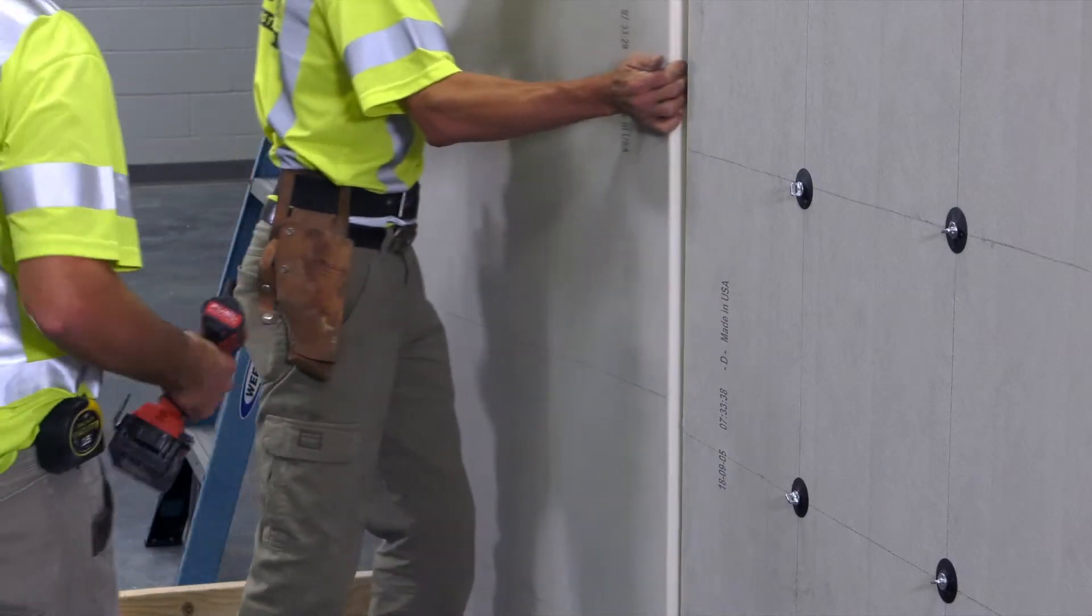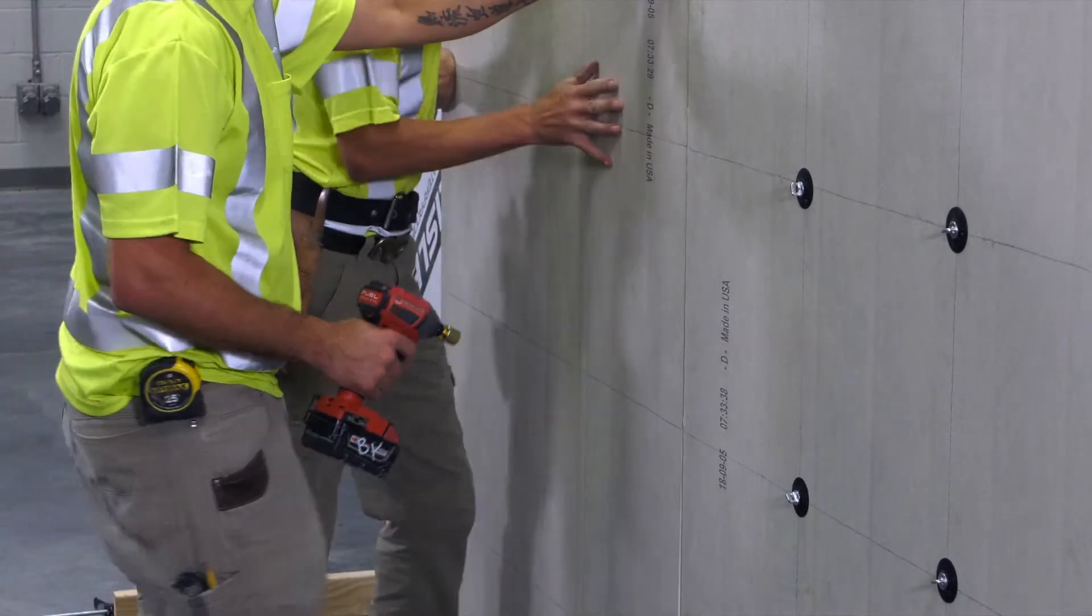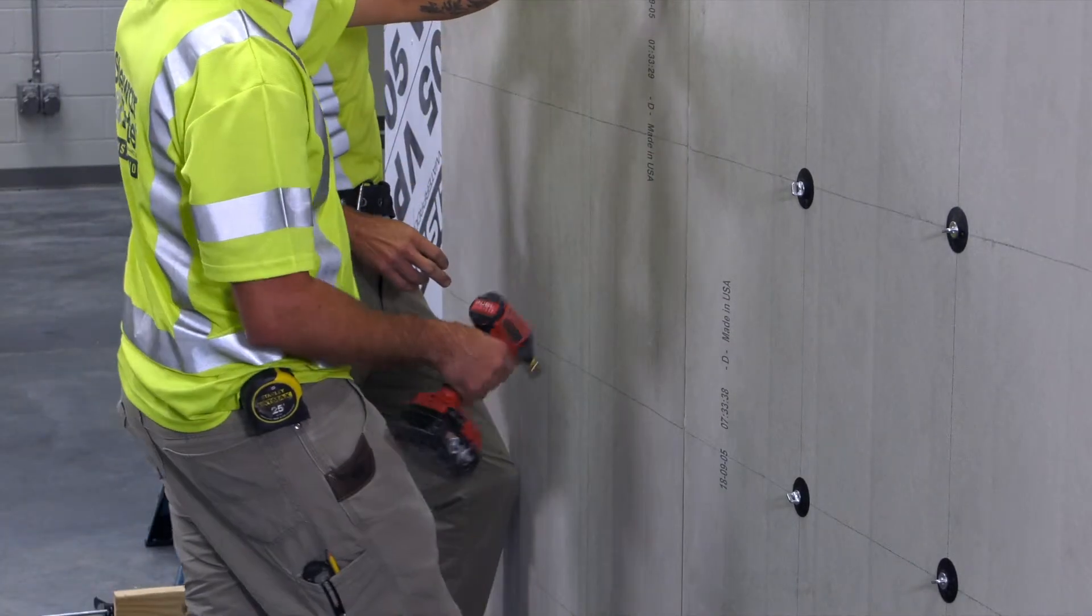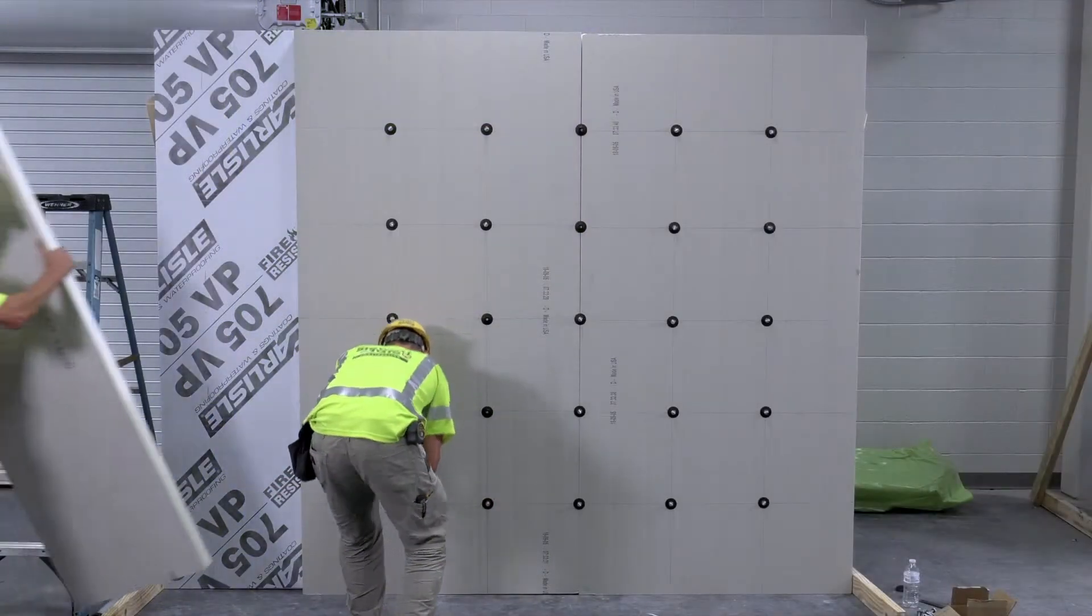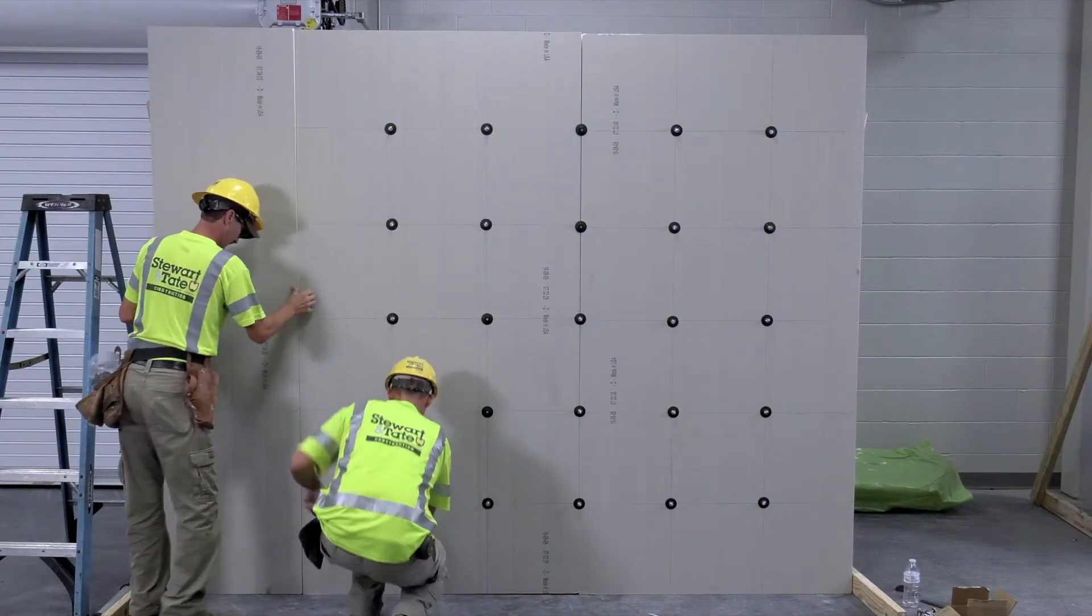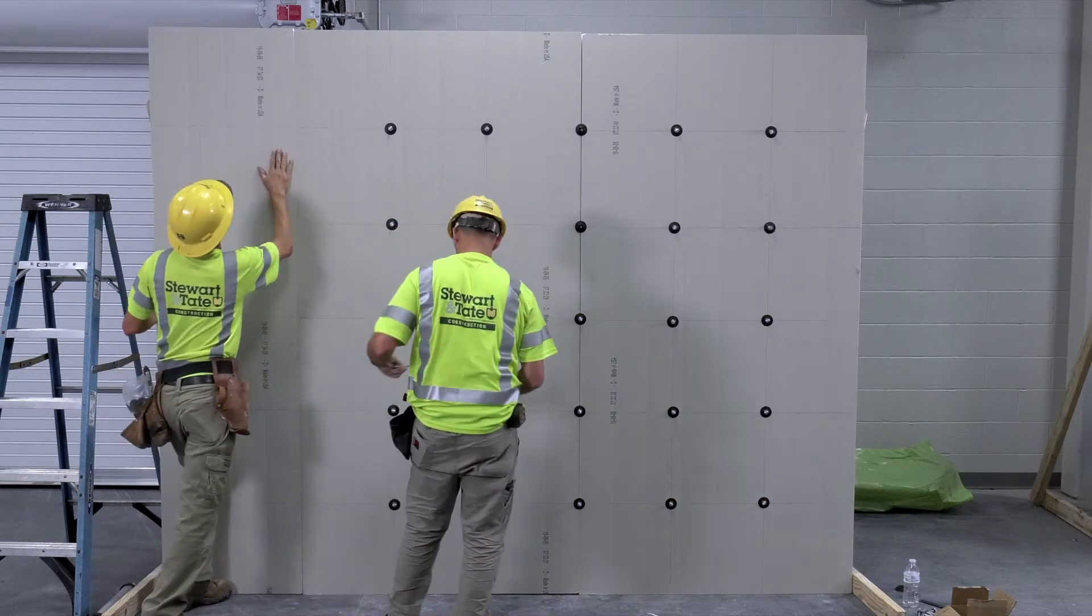Bring in another sheet of polyiso and repeat the process along the wall. As this process continues up the wall, it is recommended to stagger the insulation seams to minimize potential for thermal intrusion.